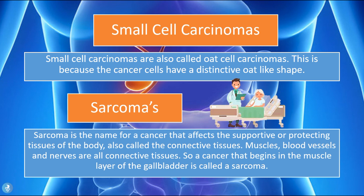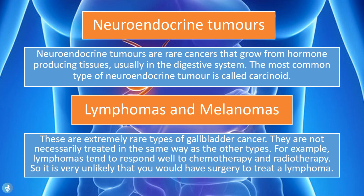Sarcomas are cancers that affect the supportive or protective — connective — tissues of the body, including muscles, blood vessels, and nerves. A cancer that begins in the muscle layer of the gallbladder is called a sarcoma. Neuroendocrine tumors are rare cancers that grow from hormone-producing tissues, usually in the digestive system; the most common type is called the carcinoid. Lymphomas and melanomas are extremely rare types of gallbladder cancer and are not necessarily treated the same way. For example, lymphomas tend to respond well to chemotherapy and radiotherapy, making surgery unlikely.